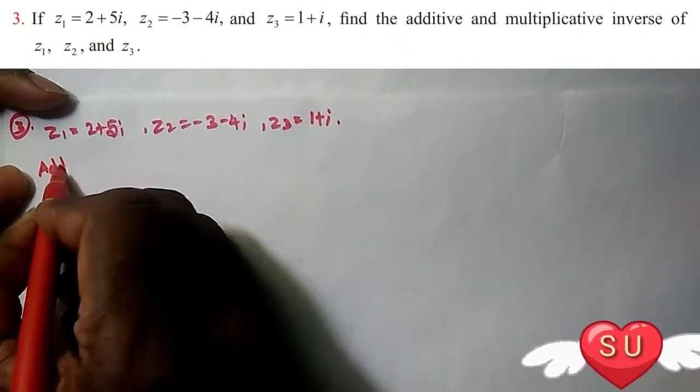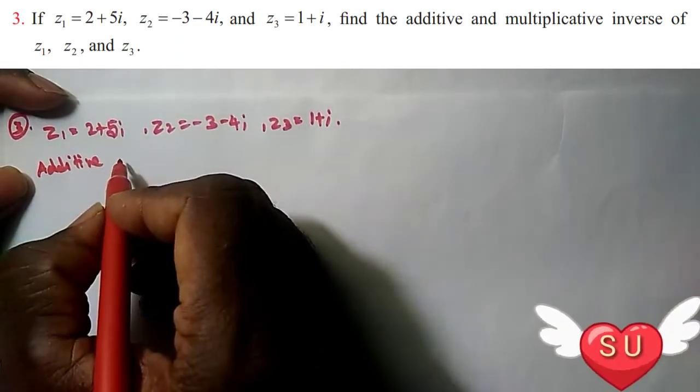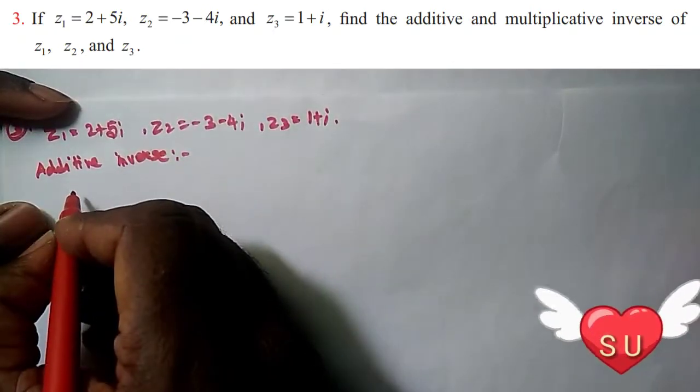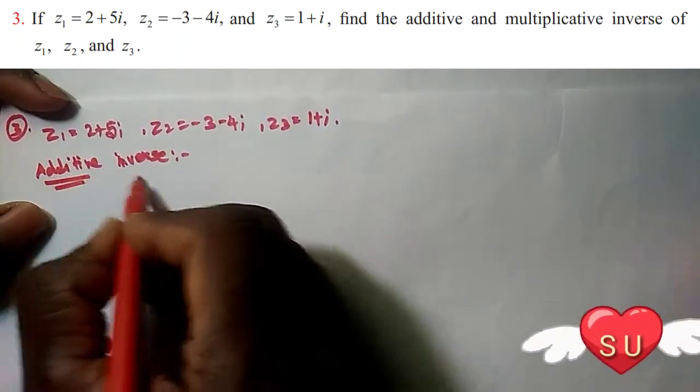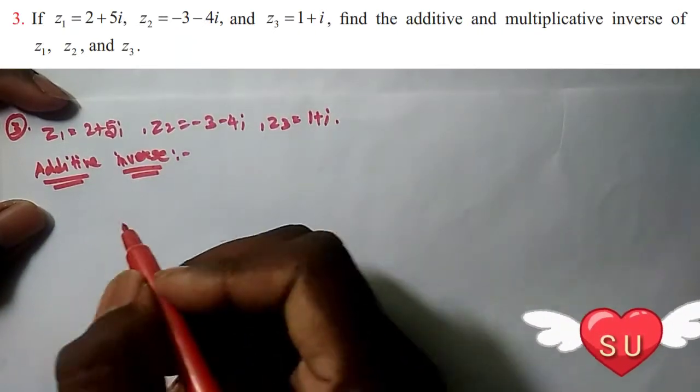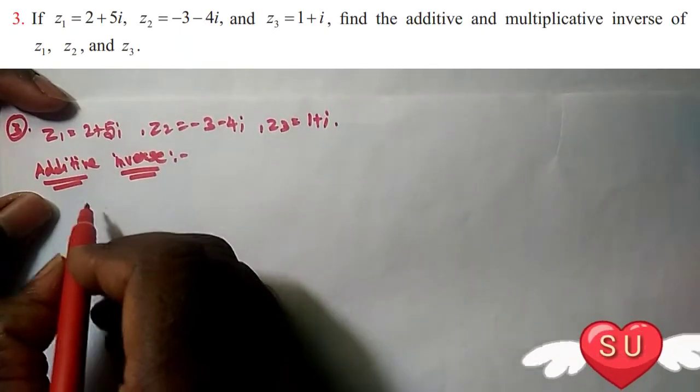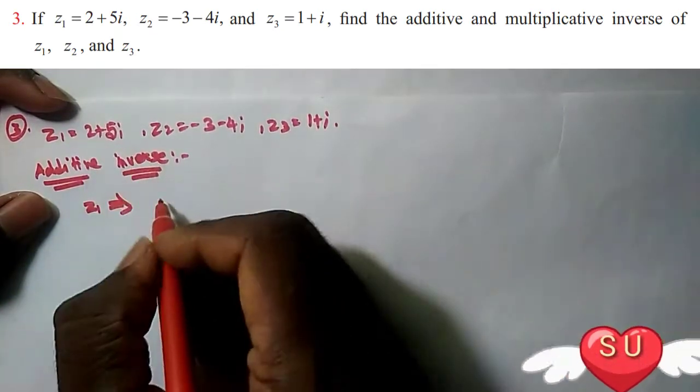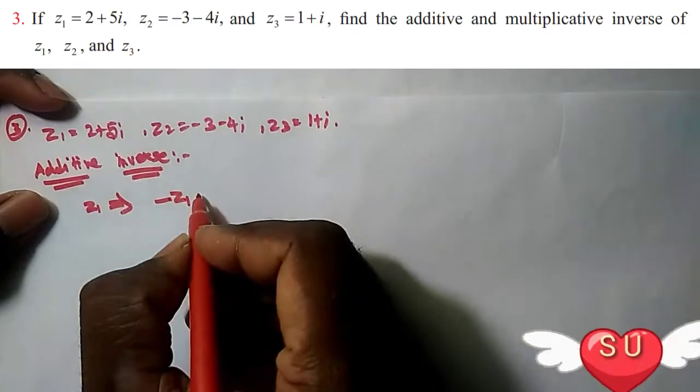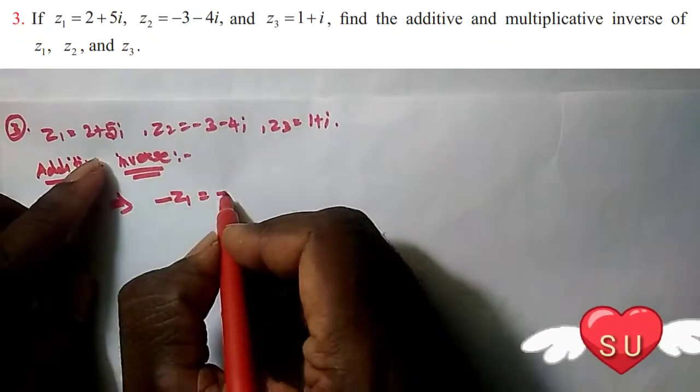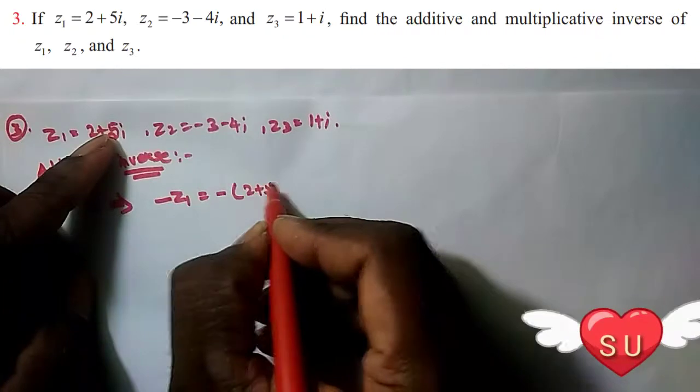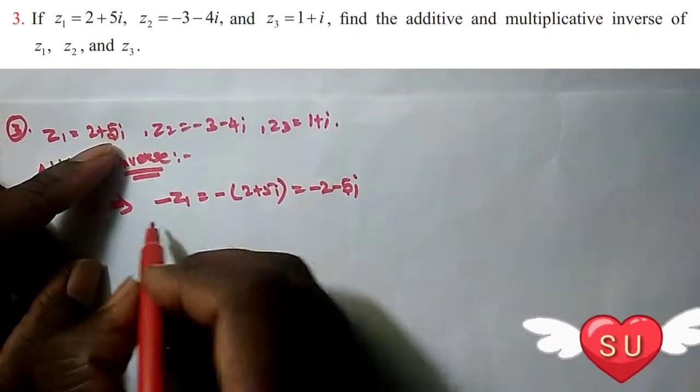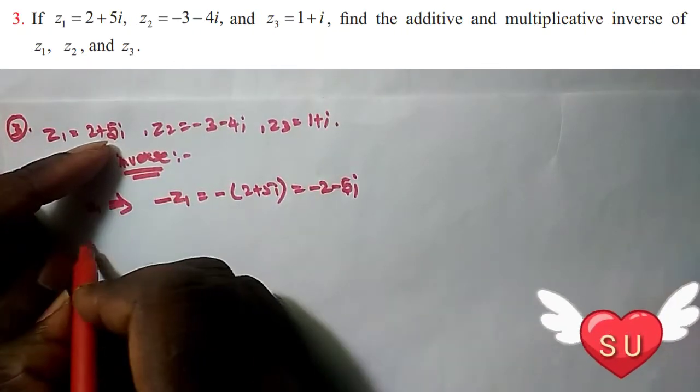First, we'll find the additive inverse. The additive inverse is when z₁ plus its inverse equals zero. So minus z₁ is the additive inverse. The value of minus z₁: if z₁ is 2 + 5i, then minus z₁ is -2 - 5i. This is the additive inverse.